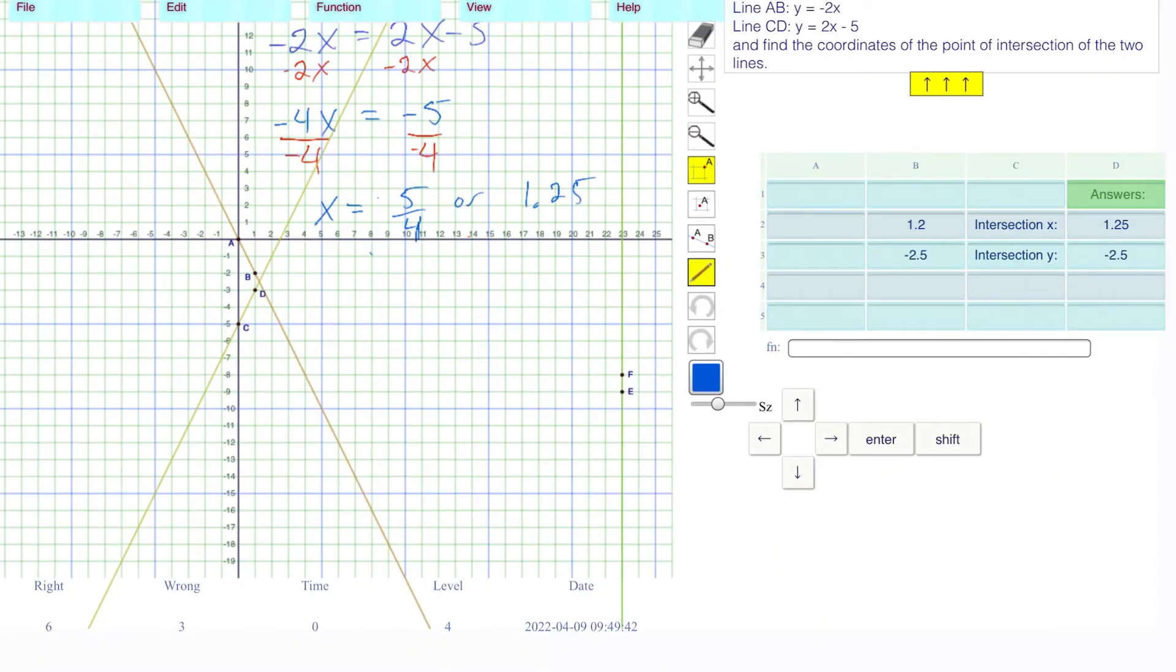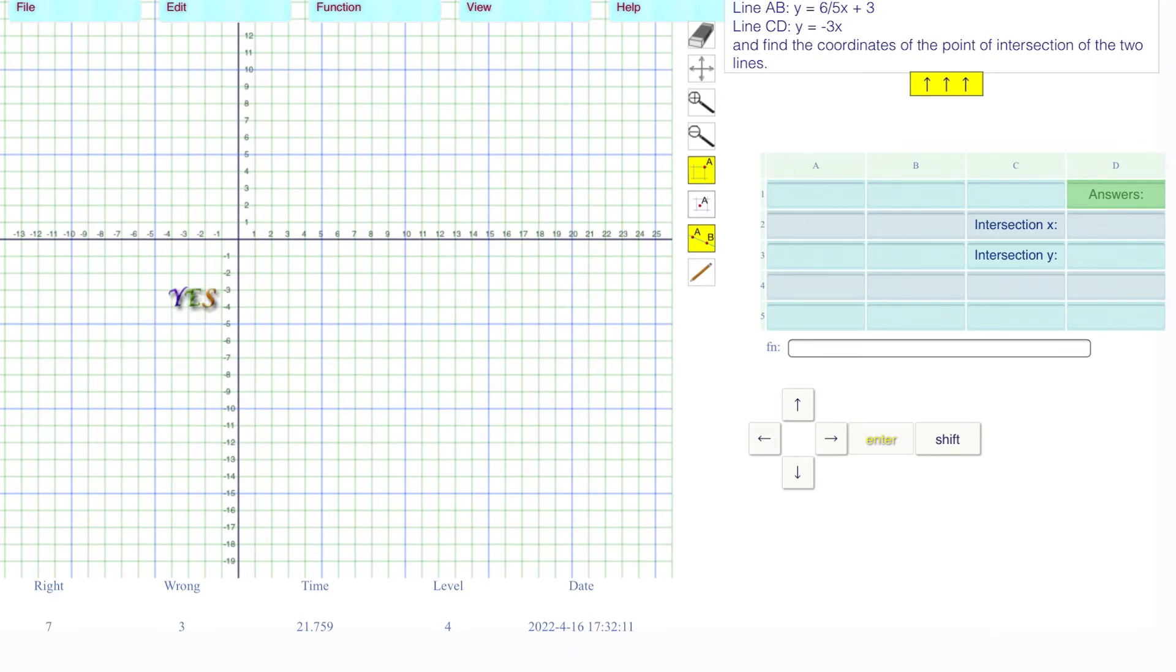By saying 1.2 and negative 2.5, and they're saying 1.25, that looks pretty close. And that's how you do level 4. Have a good day.